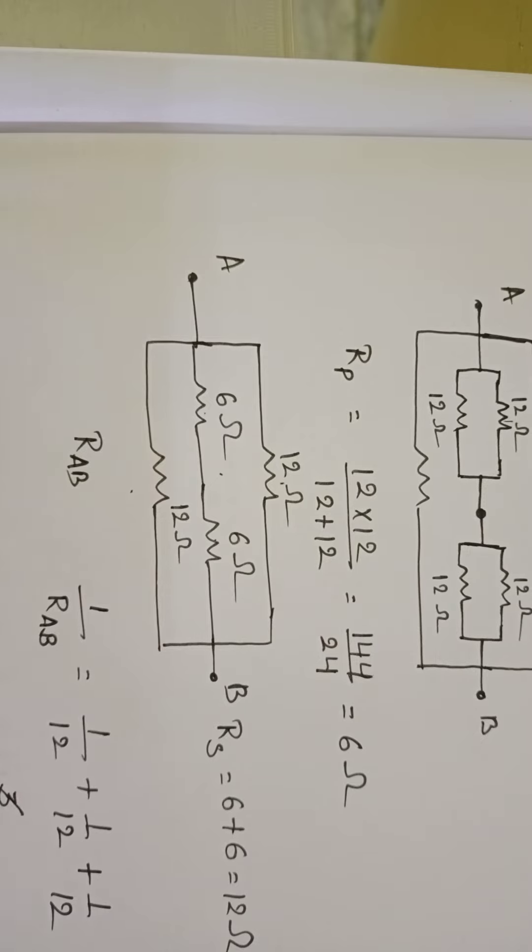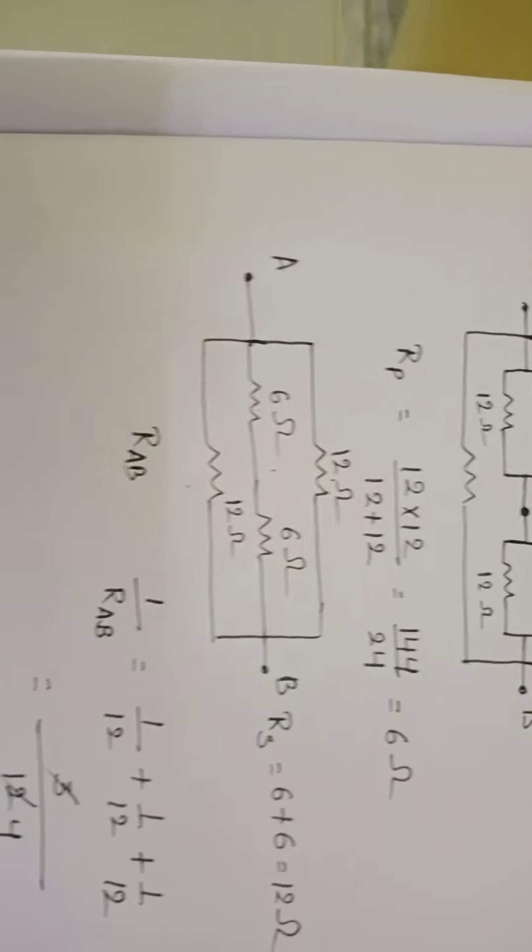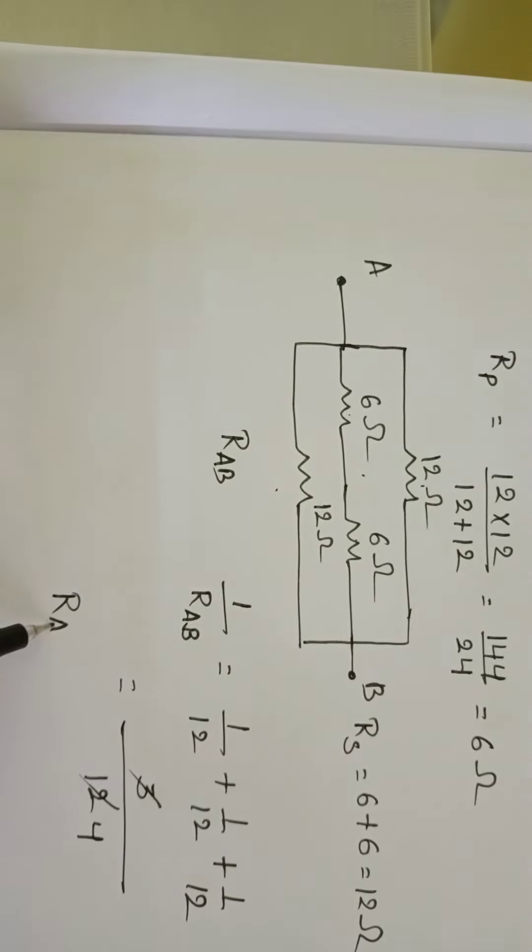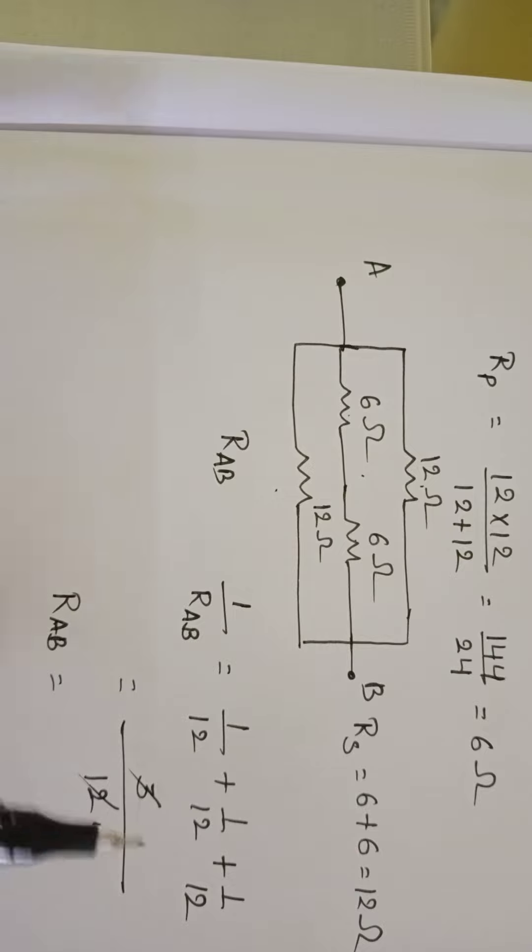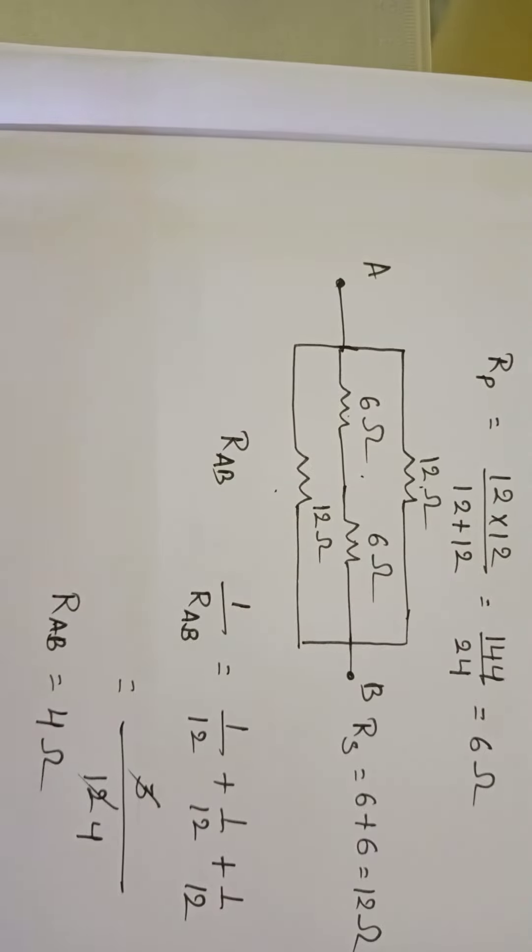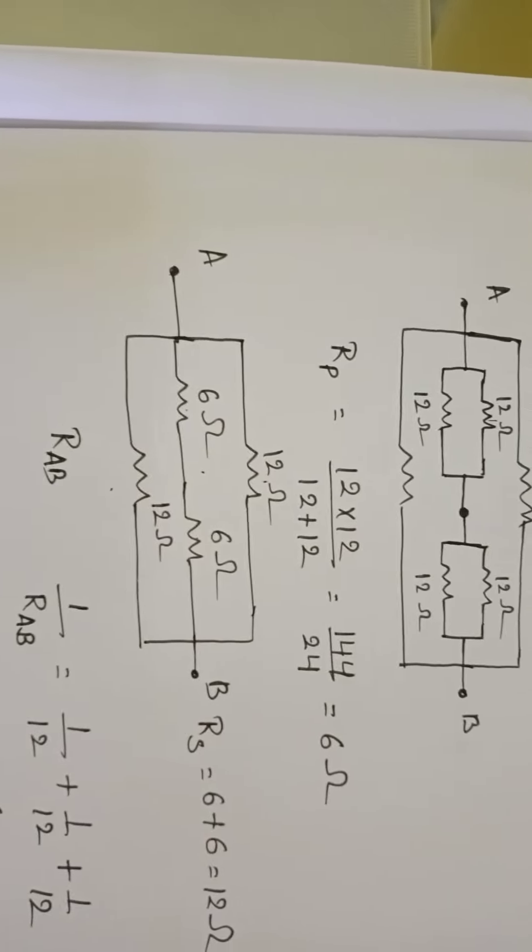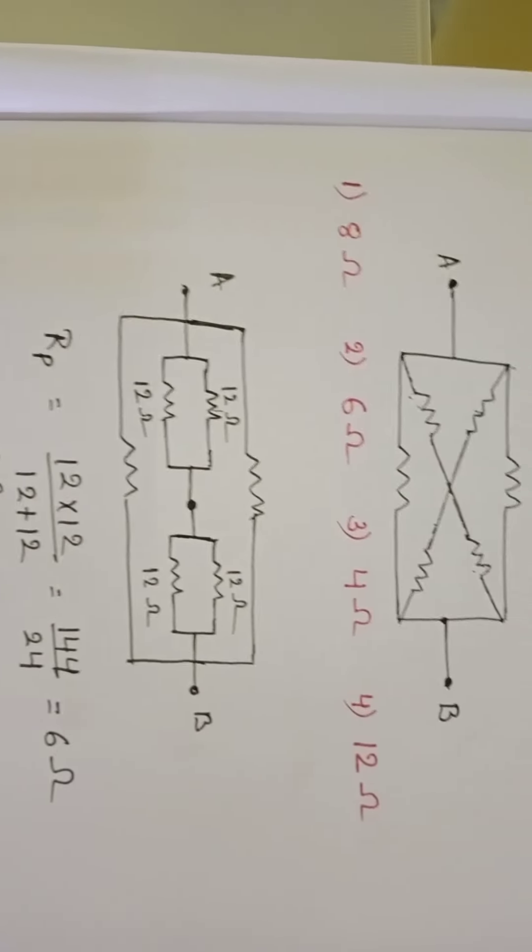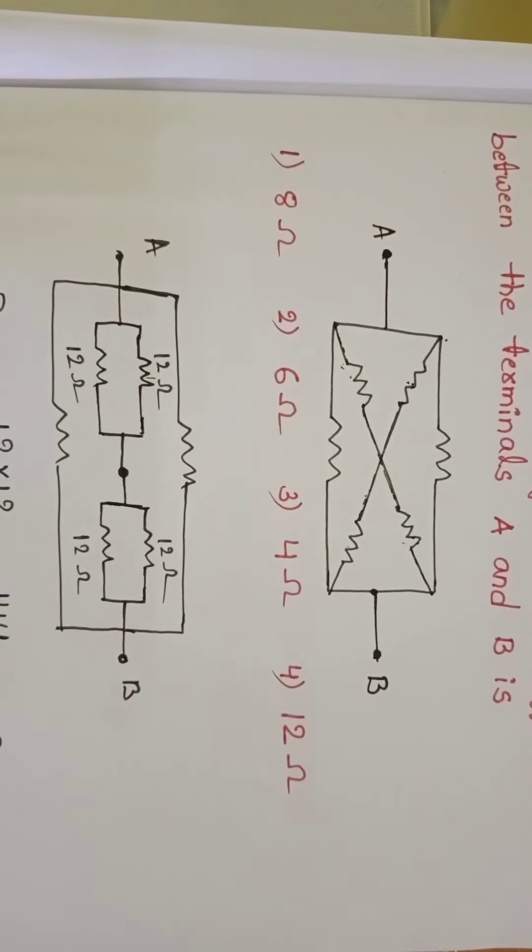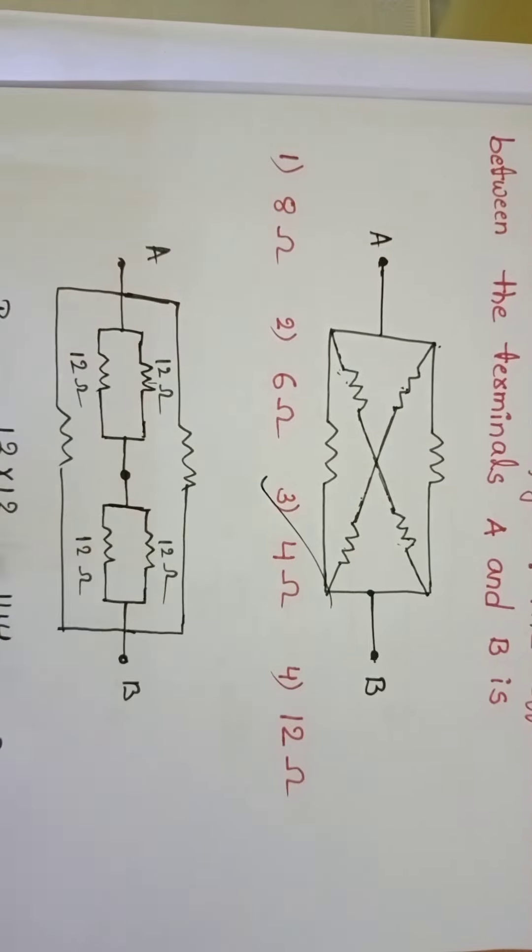The equivalent resistance between point A and B is 4 ohm. So once you check the given options, third option is correct.